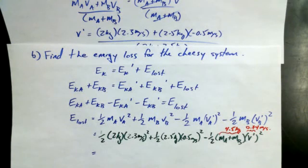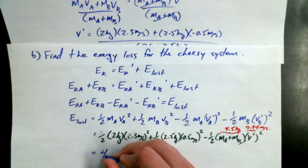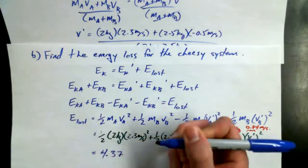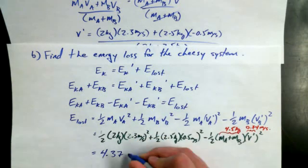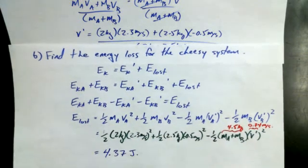4.3705? Woo-hoo! For sure. 0.4? Oh, it rounds in the C50. 4.37 approximately joules. So we end up losing about 4.37 joules in the end.